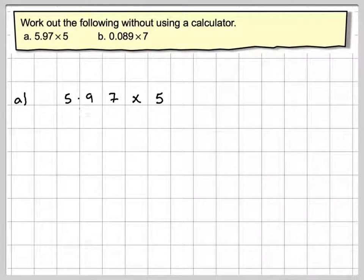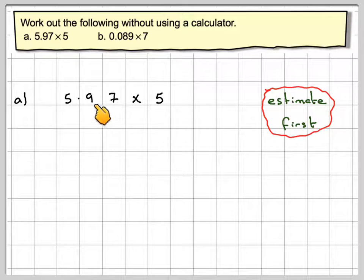In this case we need to do 5.97 times 5. We're just going to estimate the answer first. Now 5.97,